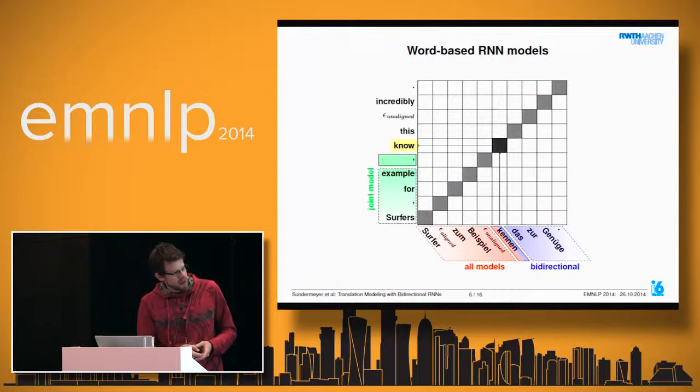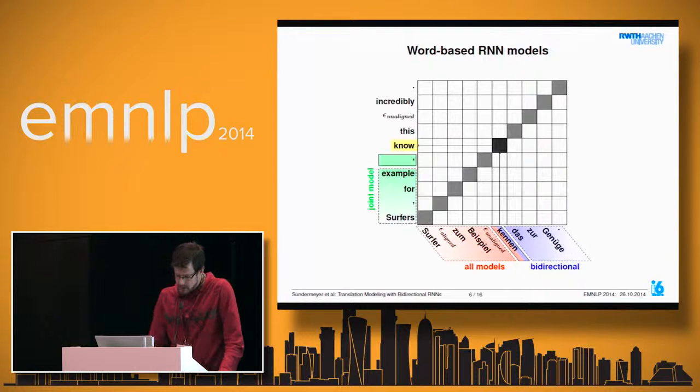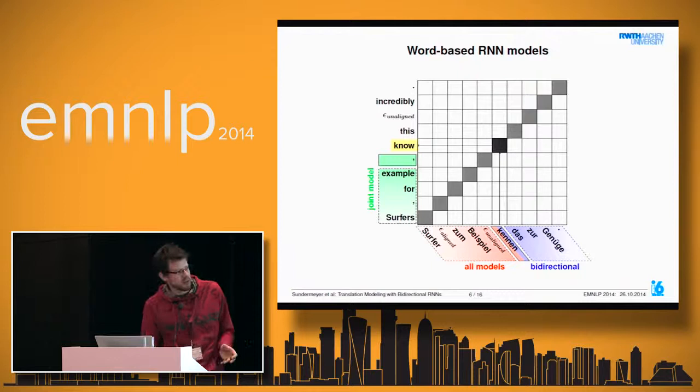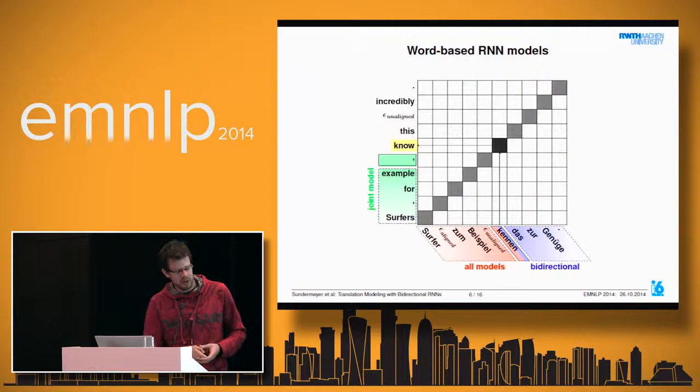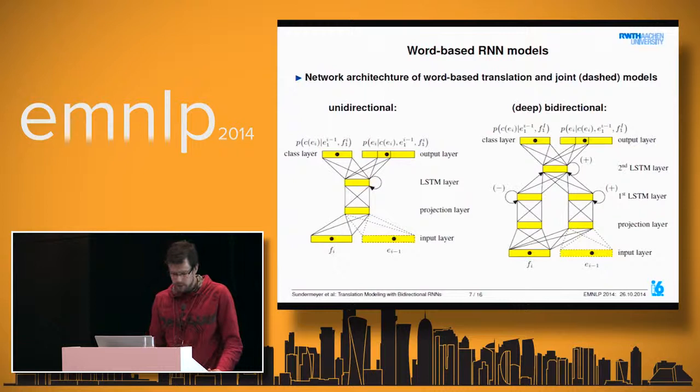Bidirectional models can also look at future source information. The current source word is fed into the network and complete future information is available through recurrency. In practice, this is done with two parts of the neural network side by side: one processes the source sentence in forward direction, the other in reverse. These are the network configurations used in our experiments.